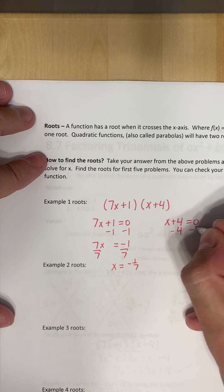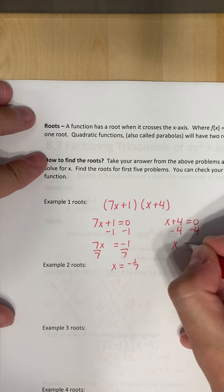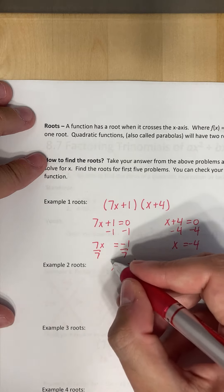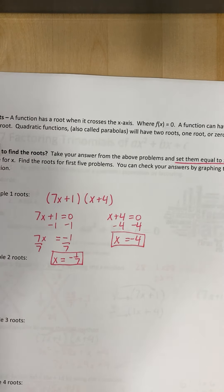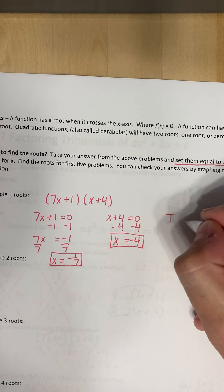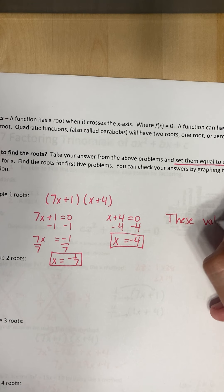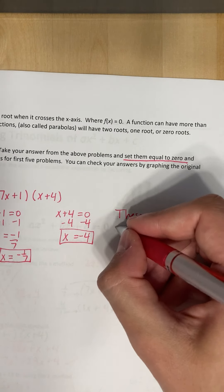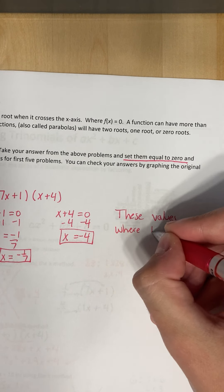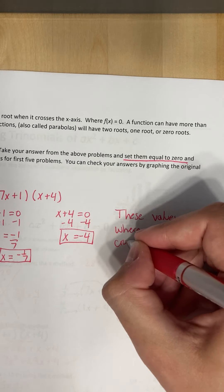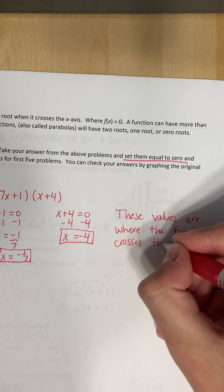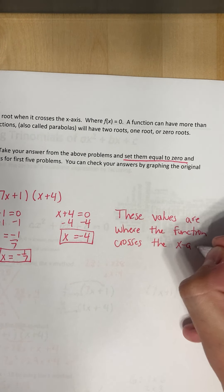And then let's see, what is x equal to over here? Well, x is equal to negative four over here. So these are my two roots. These values are where the function crosses the x axis.